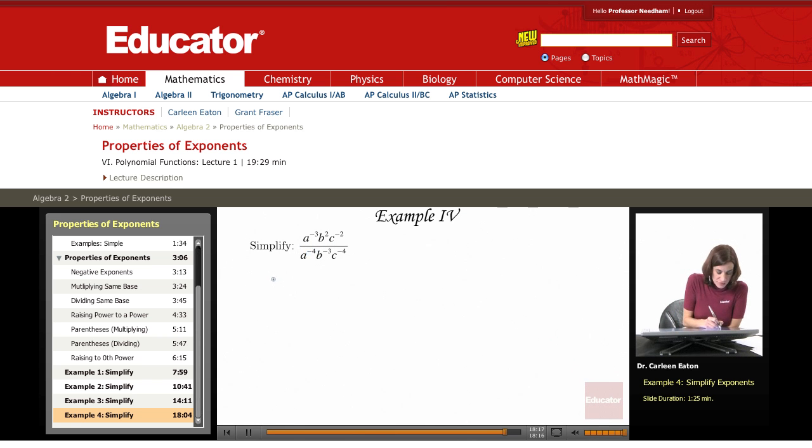So I have a to the negative 3, and using my rule for division, a^m divided by a^n equals a^(m minus n). So a^(negative 3 minus negative 4), b^(2 minus negative 3).